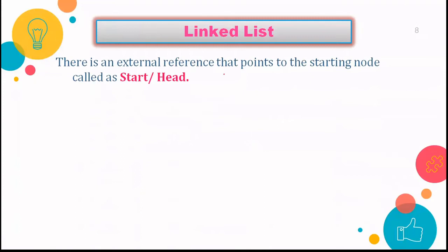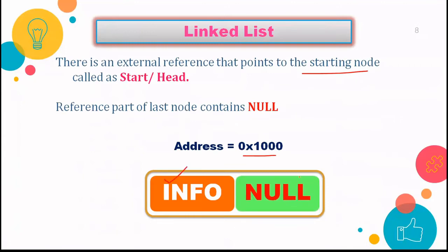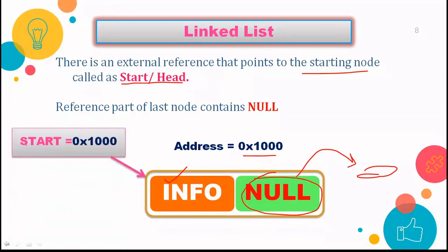There is an external reference called 'start' or 'head' that points to the starting node. If there is only one node, its next part will point to null, meaning it is not pointing to any other node. The start pointer stores the address of the first node, and each node stores the address of the next node. Null is stored in the next field of the last node.